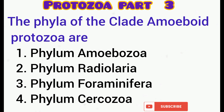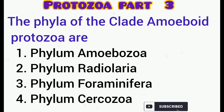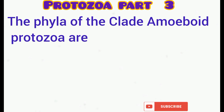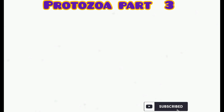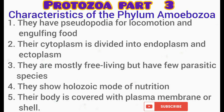The phyla under the clade amoeboid protozoa are phylum Amoebozoa, phylum Radiolaria, Foraminifera, and Cercozoa. In this video, we will be talking only about the phylum Amoebozoa.